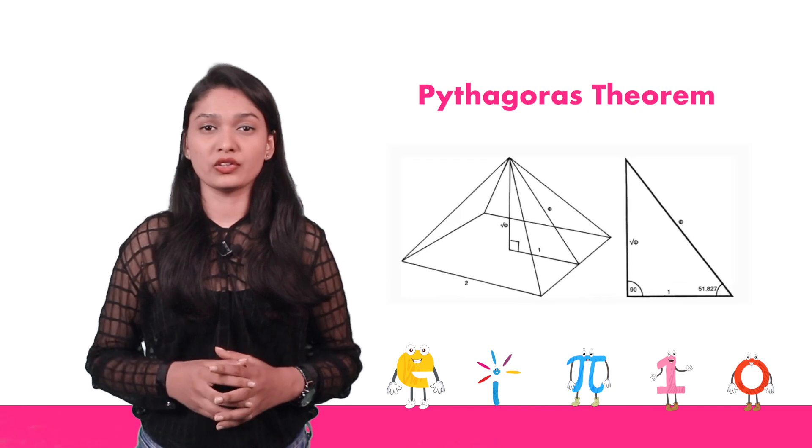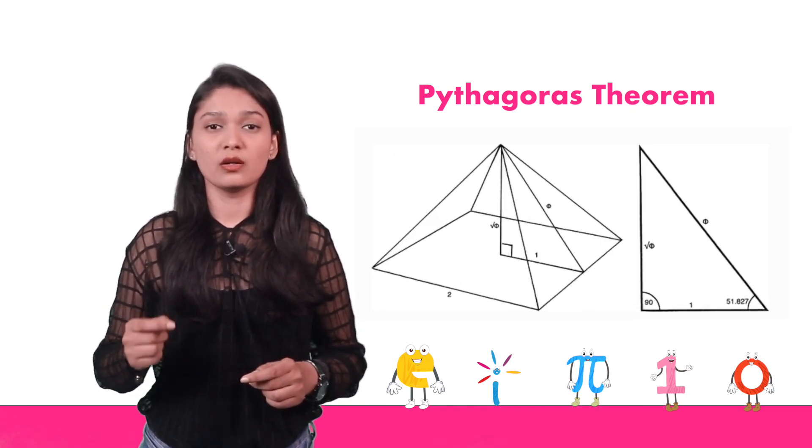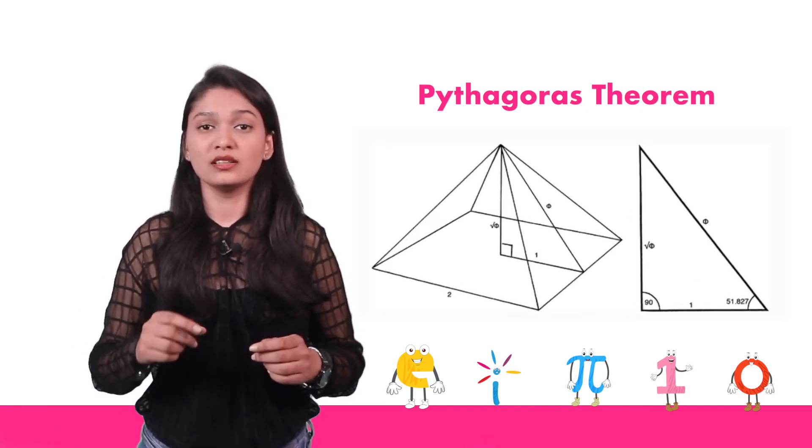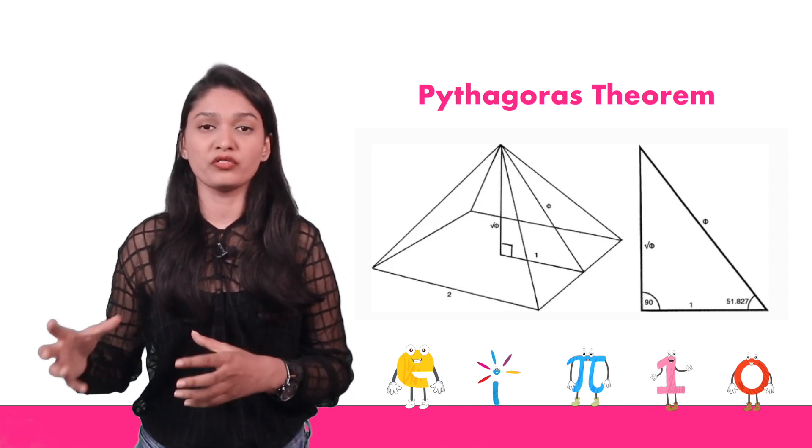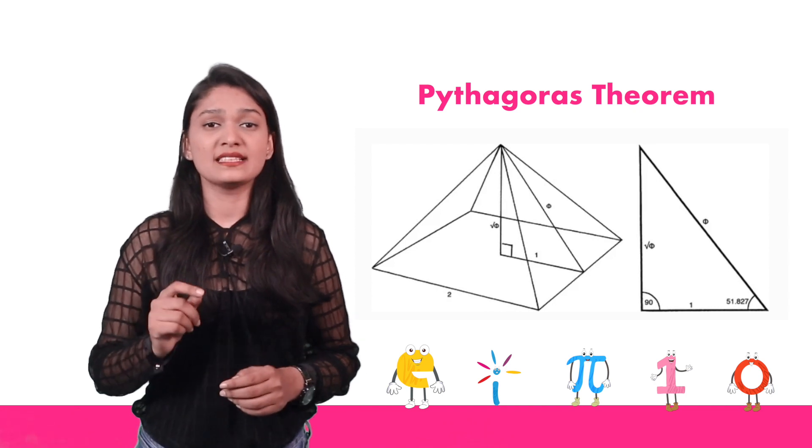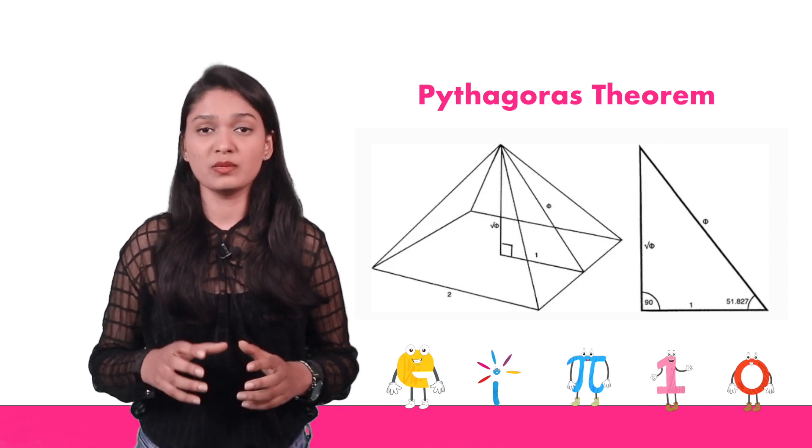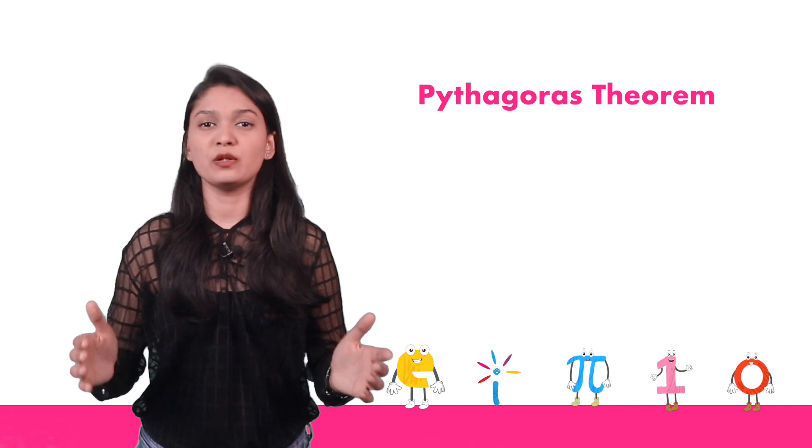The next one is the Pythagoras theorem. The Pythagoras theorem is used to measure the perfect right angle and at the same time it is used to measure the size and shape of the structure, and the perfect example where the Pythagoras theorem is used in architecture is the great pyramid of Giza.